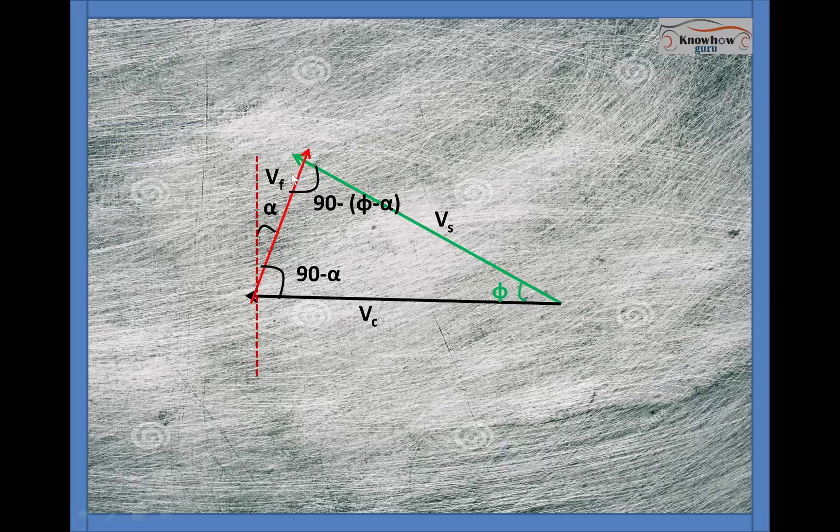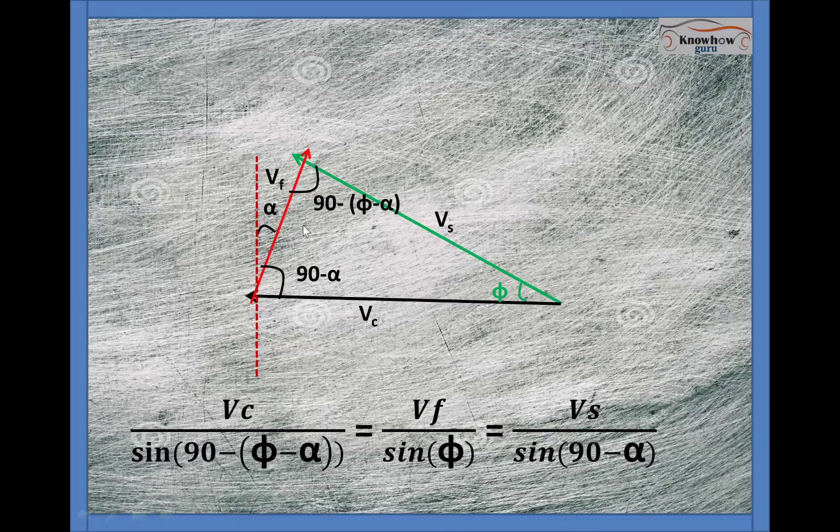Now there is a time to establish their relationship with each other. We are going to use a basic sine rule to find the relationship between them. That is like Vc upon opposite angle sine of opposite angle that is sine of 90 minus alpha.